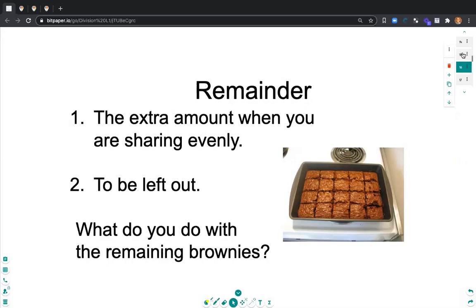So let's imagine we're baking brownies and we're going to divide these brownies evenly amongst friends or family. What do you do with the remaining brownies, the leftover ones? So you set them aside for later. Do you share those as well? This is called the remainder. It's the extra amount when you are sharing evenly.